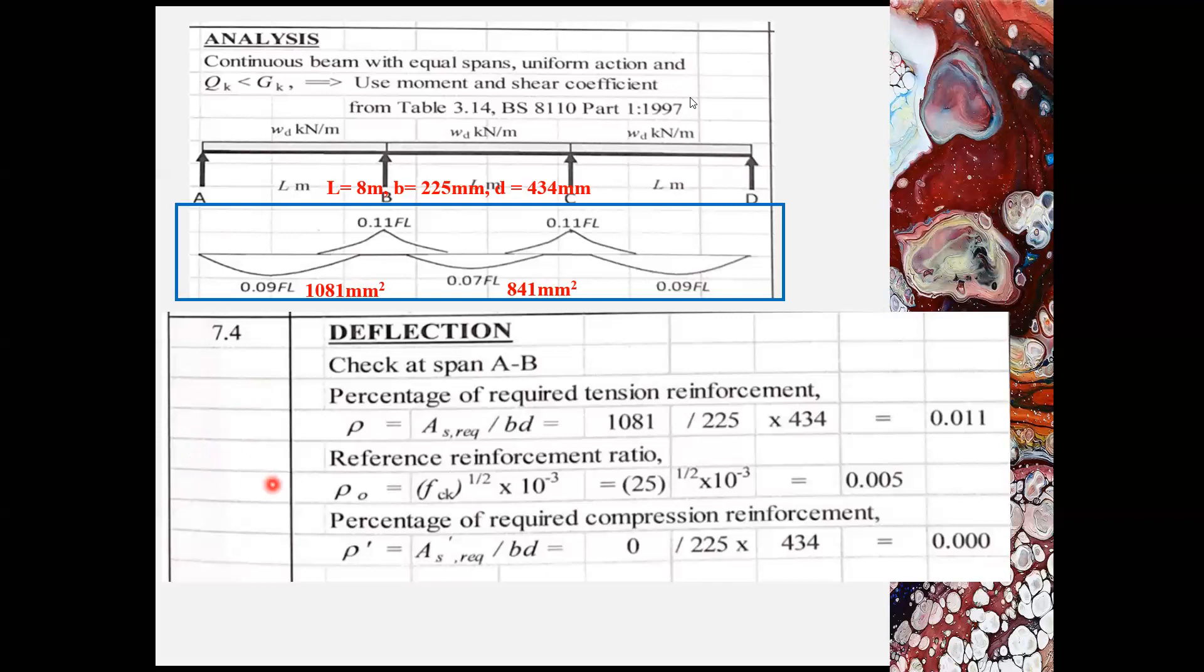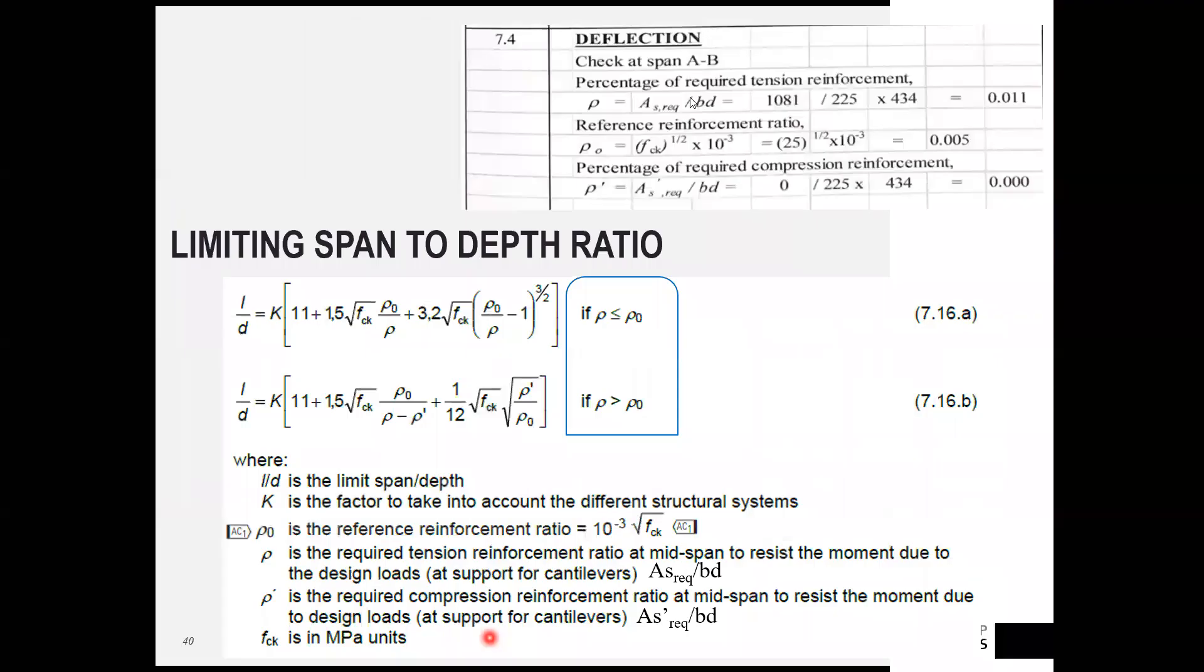If there is no compression reinforcement in this point of interest, the AS prime required is equal to zero. After we have determined rho, rho naught and rho prime, we will check against limiting span to depth ratio.